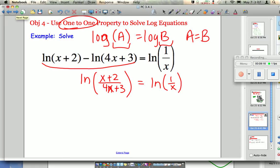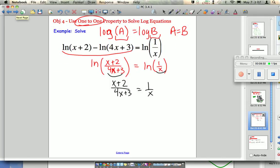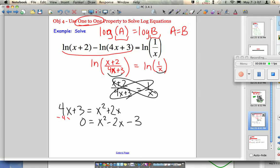It's basically just canceling out the logs, because if the natural log of this equals the natural log of this, then they must be equal. So x plus 2 over 4x plus 3 equals 1 over x. That's my one-to-one property. Now I solve using what I know about solving equations. Cross multiply, so I get 4x plus 3 equals x squared plus 2x. I see it's a quadratic, so I get zero alone. x squared minus 2x minus 3. I subtracted 4x minus 3 from both sides to get that.